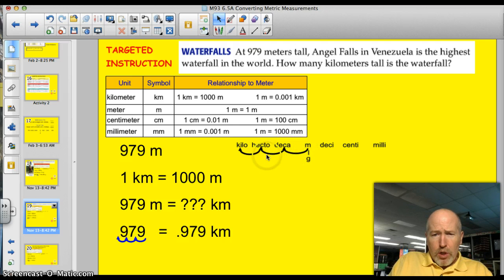1, 2, 3. And I'm moving to the left. So this would be my decimal point here. They're 979 meters. So I have to move to the left. I'm going to have a smaller number.